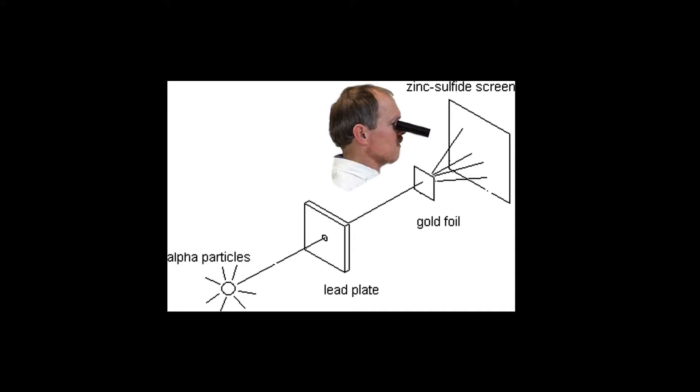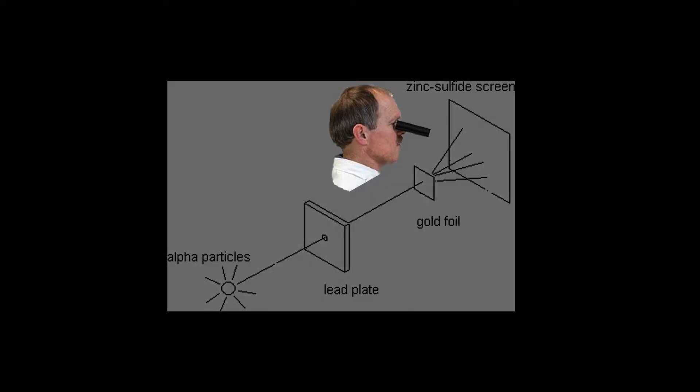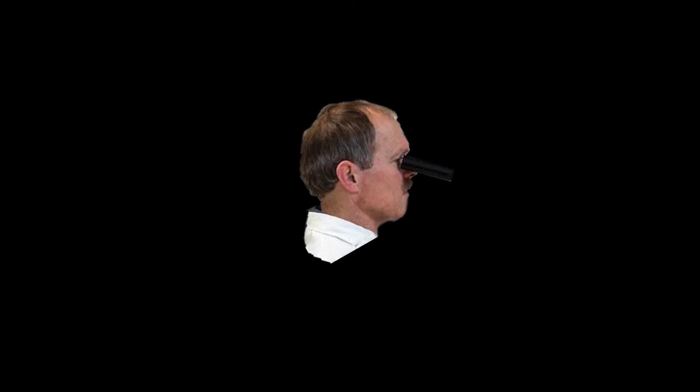Observations of this effect were made using a microscope coupled to a fluorescent screen. Any alphas interacting with this screen produced a very faint light flash. Geiger and Marston would have to sit in the dark for long periods of time to acclimate their eyes in order to be sensitive enough to visually count these weak flashes. It was a very painstaking and laborious process for which Rutherford himself had absolutely no patience.